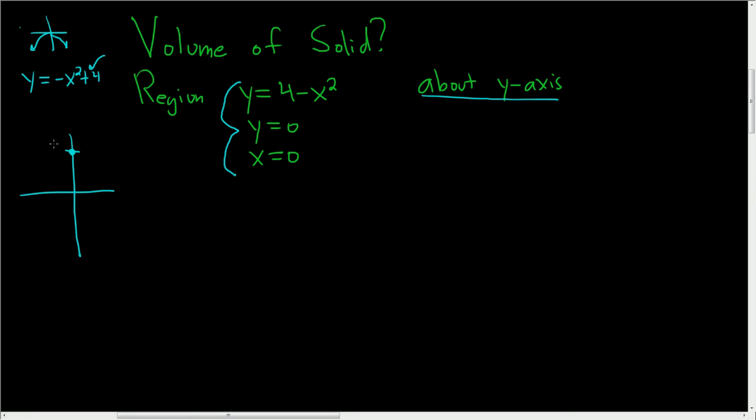So this here is going to be 4 and then it comes down like this and it crosses the x-axis. If you plug in 2 you end up with 0 and if you plug in negative 2 you also get 0. So this is 2 and negative 2.